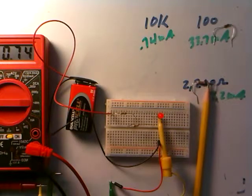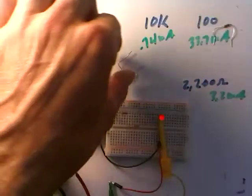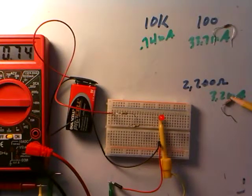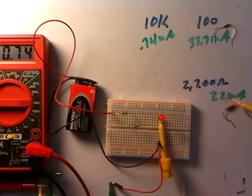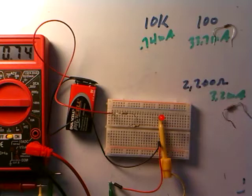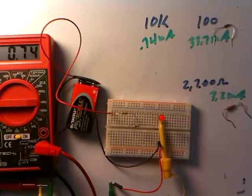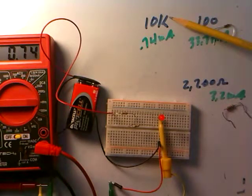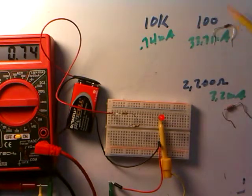We see by this simple current measurement that indeed the smallest resistor allows the most current flow, the next largest allows a smaller amount of current flow, and the largest one allows the smallest amount of current flow. Resistors are doing their job in limiting the flow of current in a circuit. The largest resistance produces the least amount of current flow, and the trend is what we expect.